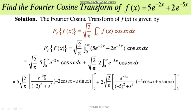For the first integral, in place of a we have negative 2, and in place of b we have s. Applying the formula gives e^(-2x) divided by ((-2)² + s²), multiplied by [(-2)·cosine(sx) + s·sine(sx)]. This result is considered between the limits 0 and infinity, with the constant (2 times root over 2 by pi) taken outside.